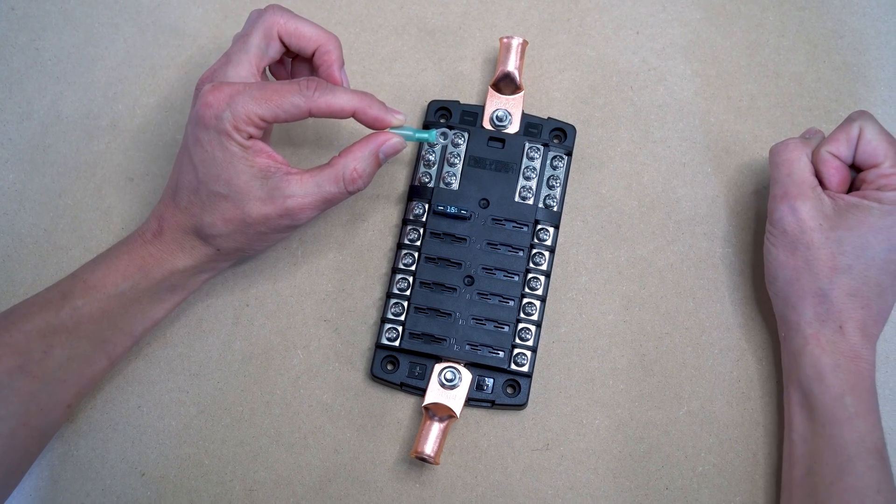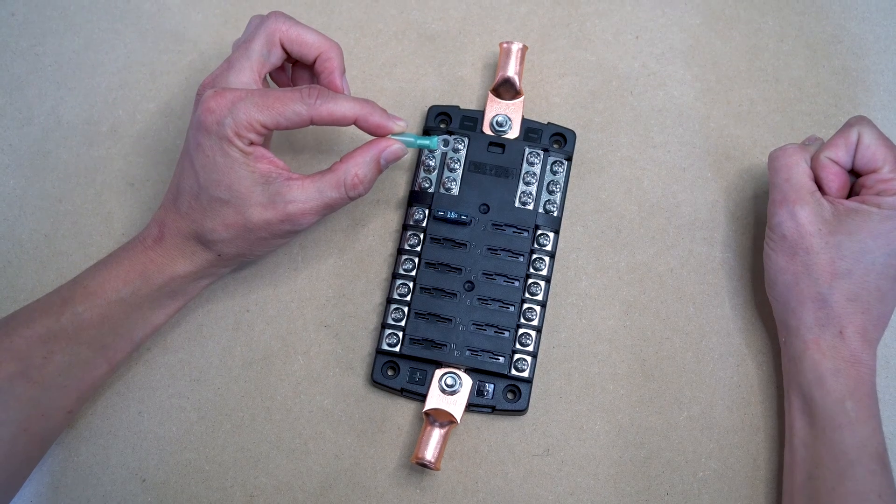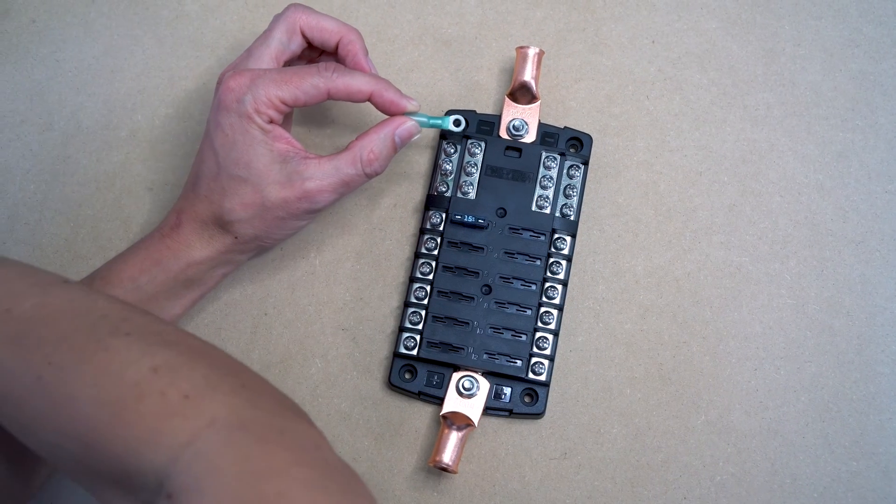To connect a DC device to the fuse panel, you'll need to crimp this ring connector onto red wire and connect it to one of the positive screws. So that's what we're going to do here.